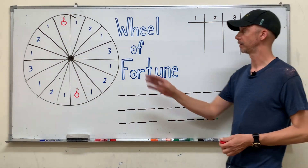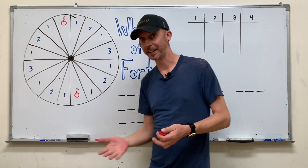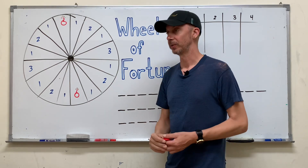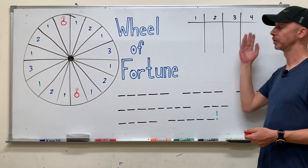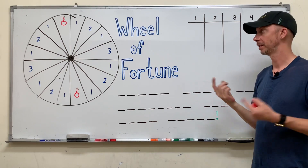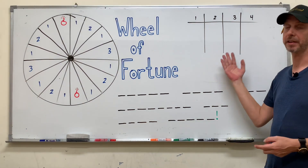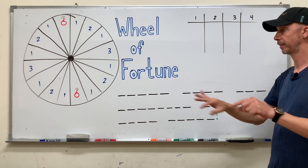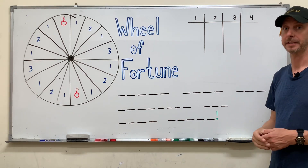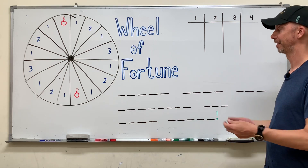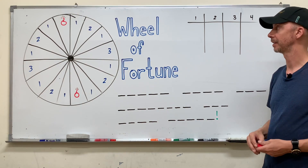There's this wheel. In the TV show it's worth money; in our classroom it's worth points. What I like to do is divide the class into multiple teams. In my opinion, this game is much more fun and engaging if there are more than two teams, so I'll try to divide my class into three, four, or even five teams and have them race to solve what this sentence says.